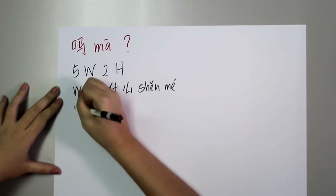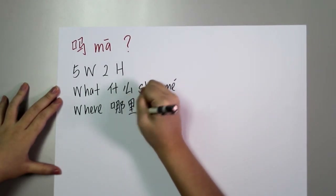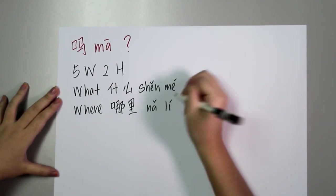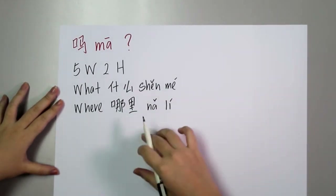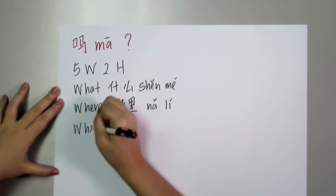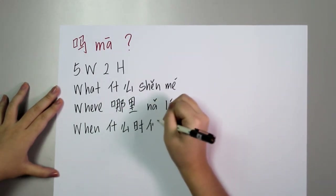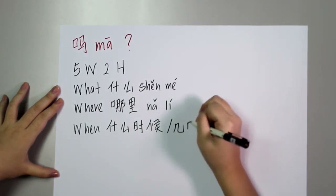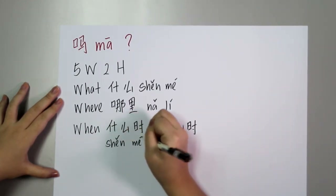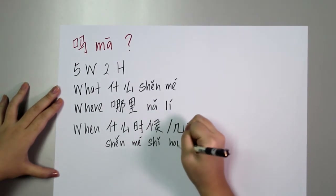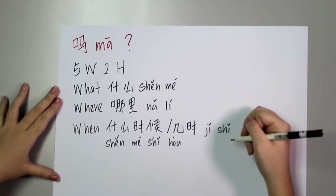The next W is 'where' — where is 哪里. So if you want to ask about places or destinations, you can use 哪里. The third W is 'when' — when is 什么时候 or 几时. This is used for asking about time.